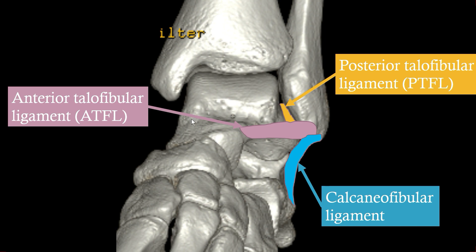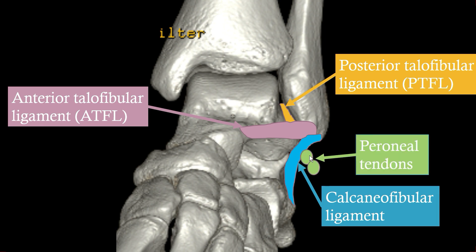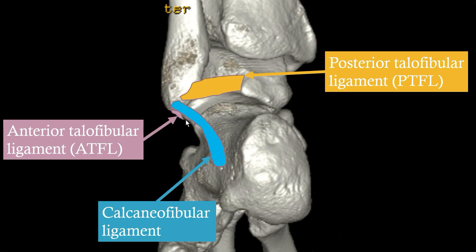From a coronal perspective, the anterior talofibular ligament has a more or less horizontal orientation, while the calcaneofibular ligament runs in a slightly banana shape. One reason for this is that the peroneal tendons run above the calcaneofibular ligament. So on coronal sequences, between the bone and the peroneal tendons, you will find the calcaneofibular ligament — that's an easy way to identify it. The PTFL is not clearly visible from this orientation.